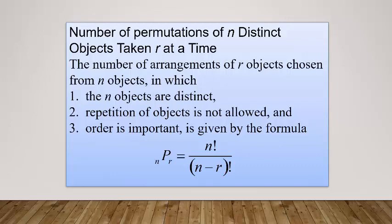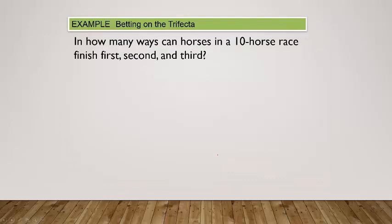The good news is you don't have to stress much about this formula — I'll show you how to do it on your calculator. Let's try this example: in how many ways can horses in a 10-horse race finish first, second, or third? I have 10 horses, that's my n, and I want to select 3 of them.